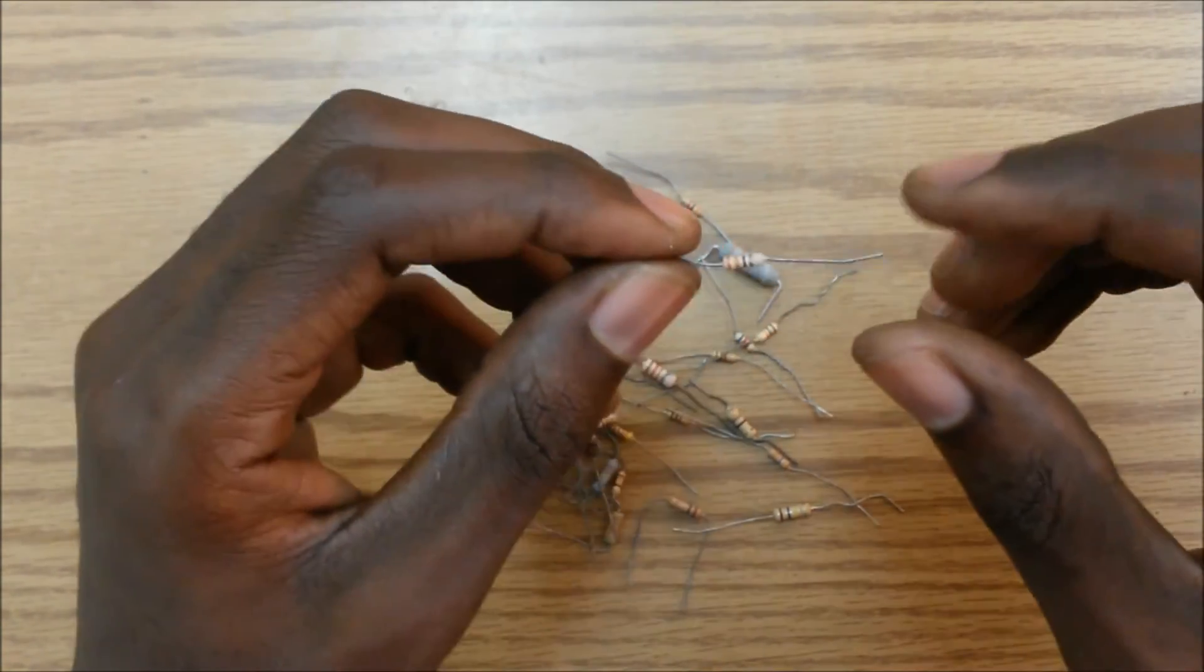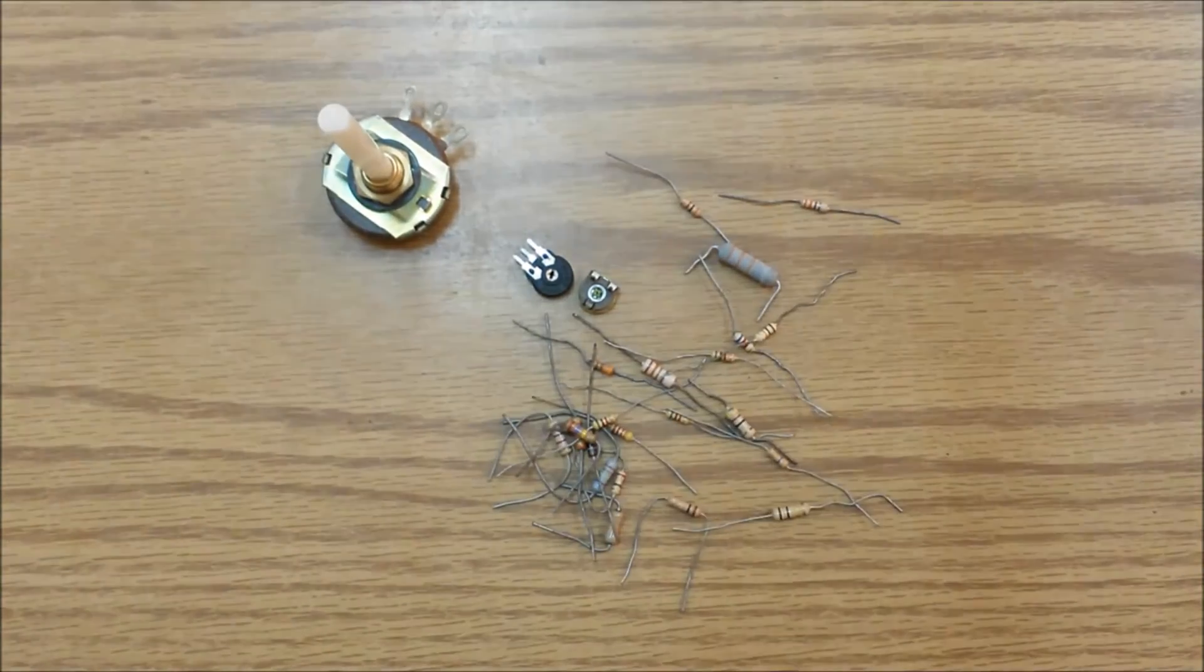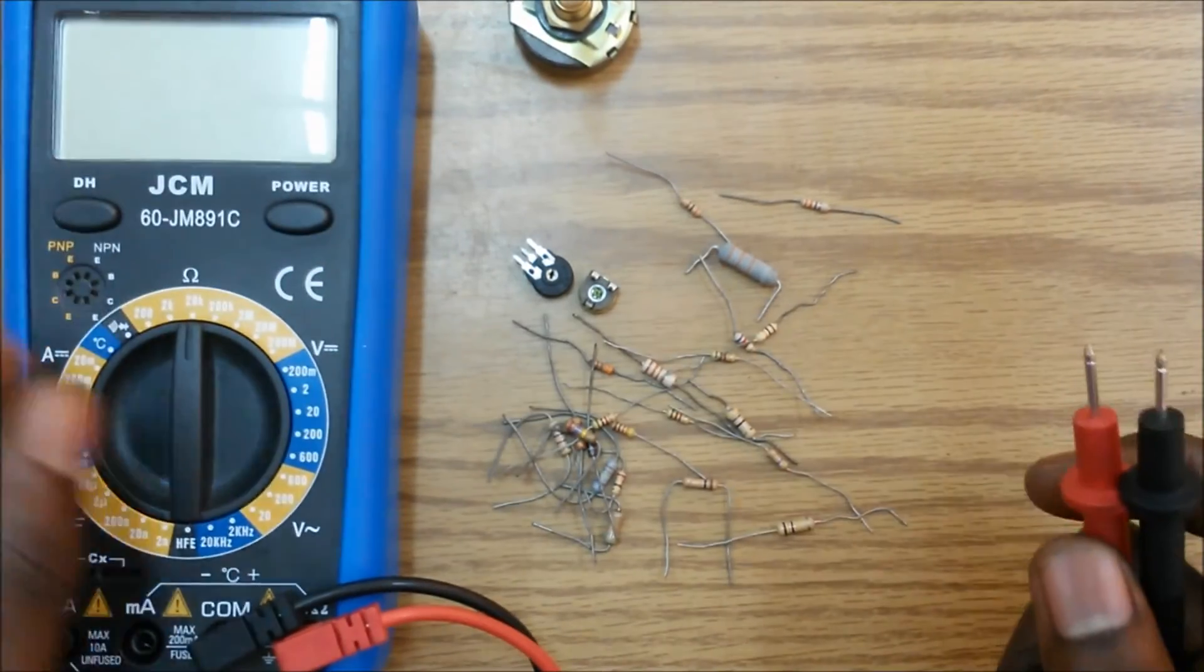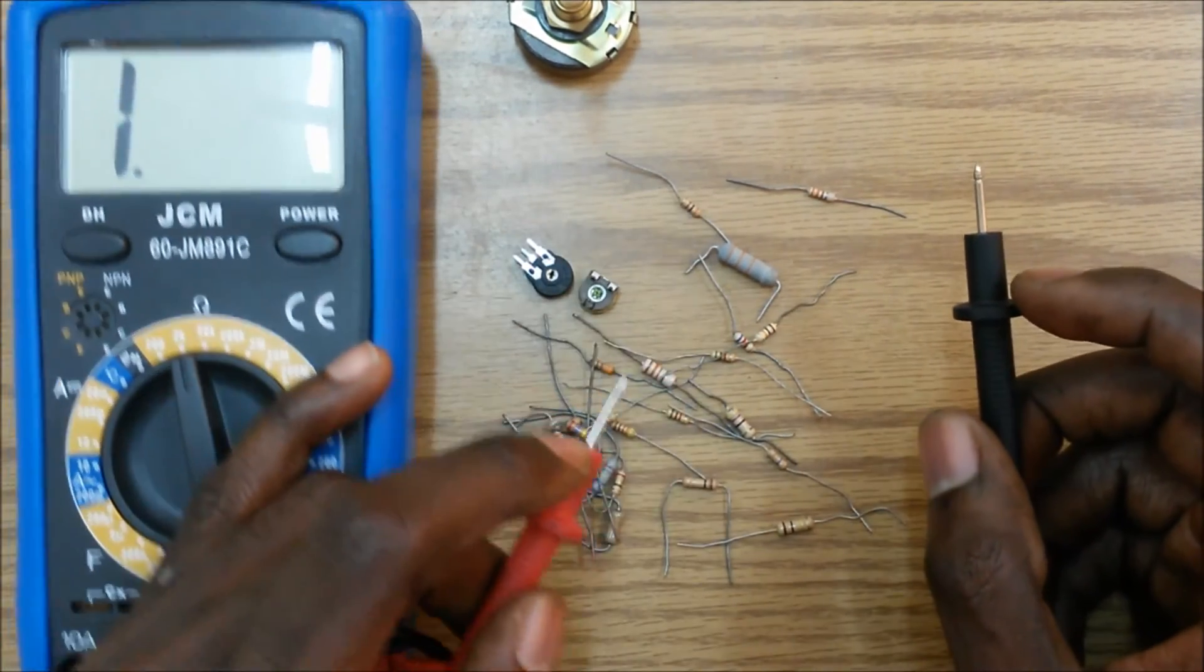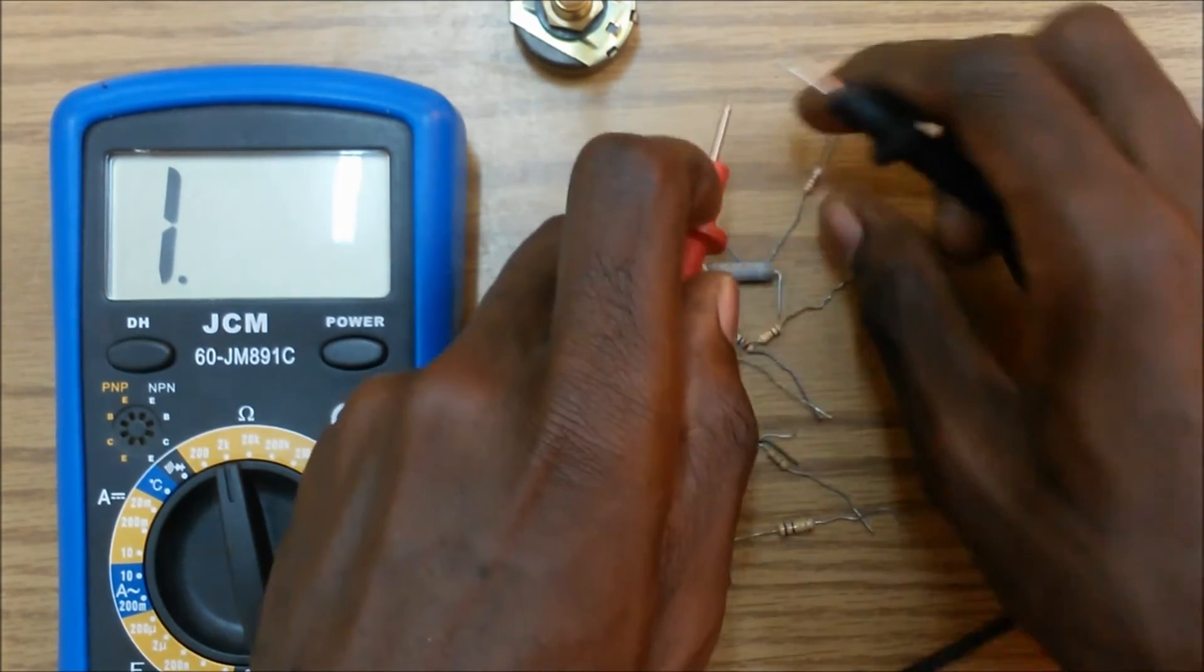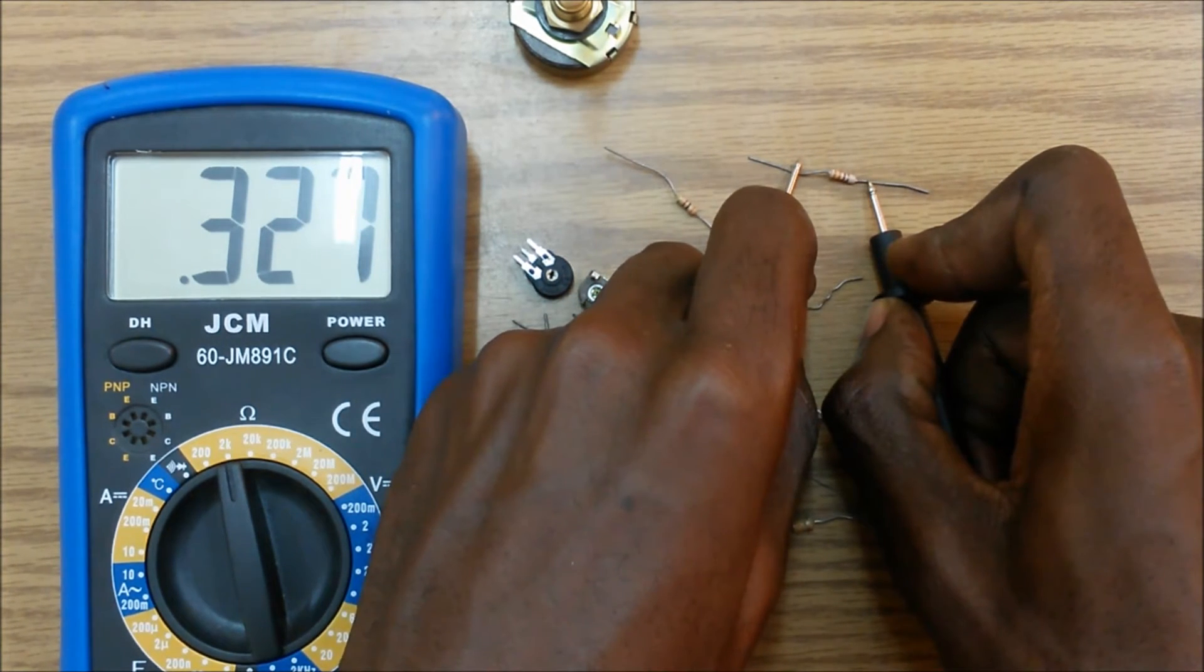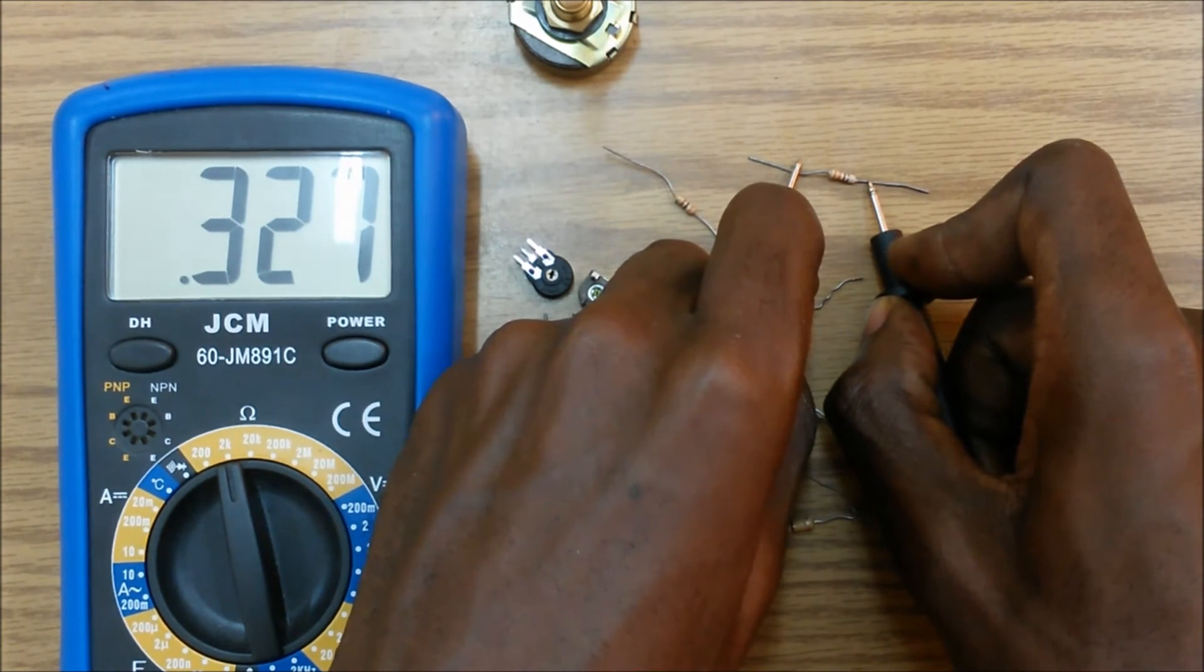And another way is to use a multimeter on the resistor scale. So we can actually measure the resistance of this resistor here. We have to turn on our multimeter and test here. And we see we are approximately 330 ohms, not kilo-ohms. So this is a fixed 330 ohm resistor.